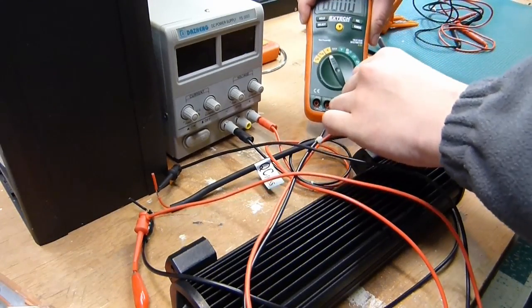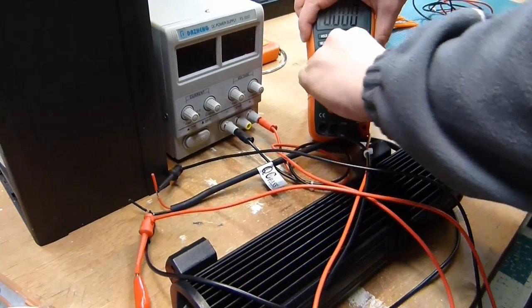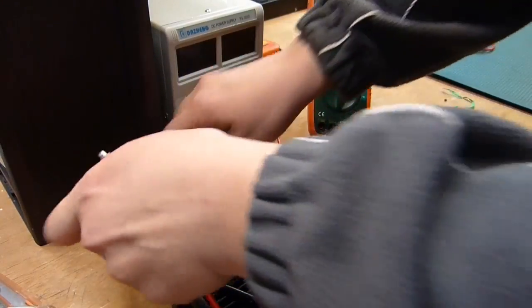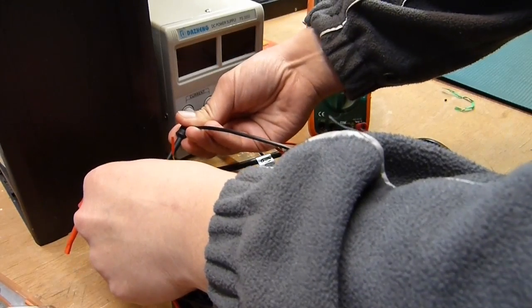But when we switch the probes around to measure the voltage drop across the LED bar, we'll see that 3.55 coming out of the adjustable power supply.